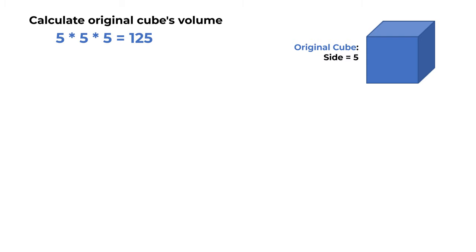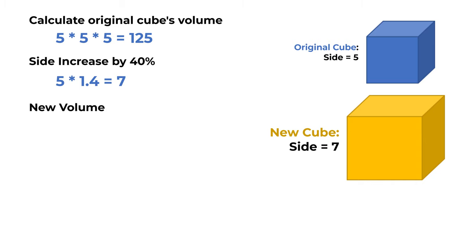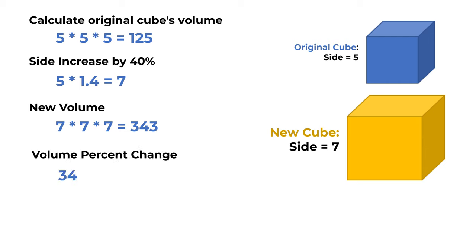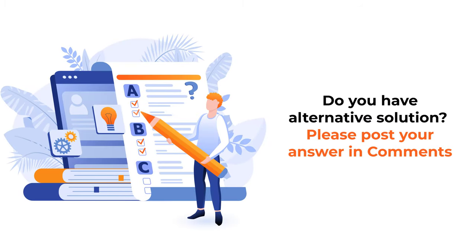Now increase the side by 40%: 5 multiplied by 1.4 equals 7. The new cube's volume is 7 × 7 × 7 = 343. The volume change in percentage is calculated as (new volume 343 divided by old volume 125) multiplied by 100%, giving 274.4%. So the correct choice is choice A, 274%.